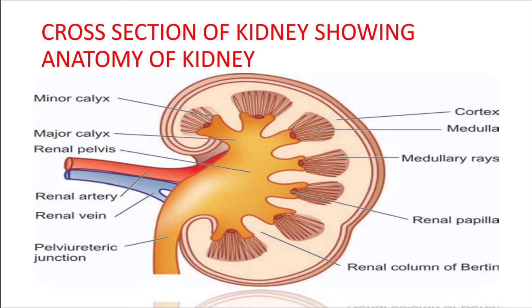Let's begin with histology of kidney — normal histology. Before understanding the histology you should be familiar with the basic anatomy of the kidney. This is the cross section of kidney that demonstrates anatomy. First of all, the kidney is covered by a capsule. Below the capsule you have the kidney, and the outer portion of the kidney is known as the cortex. Below cortex you have the medulla.